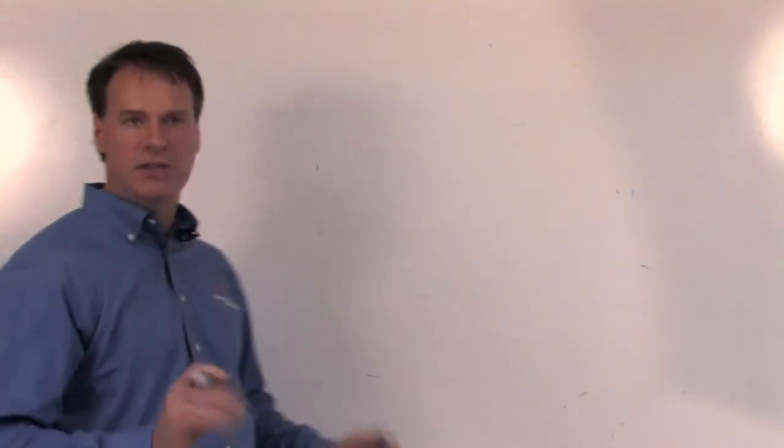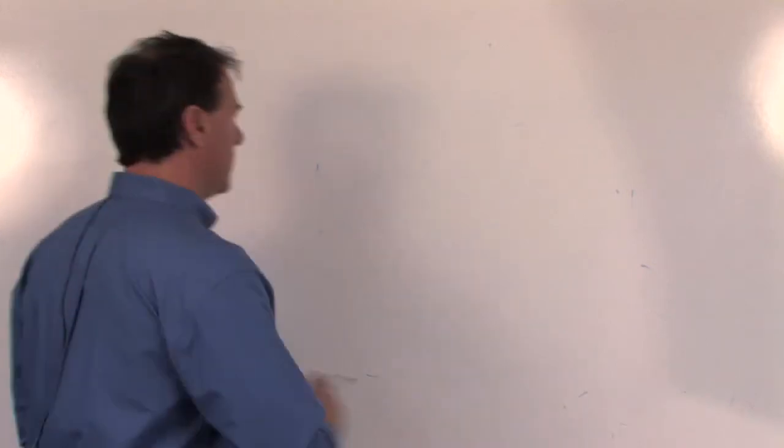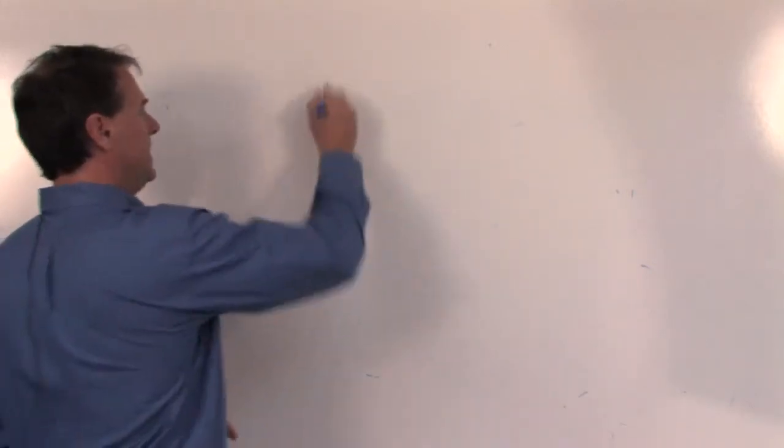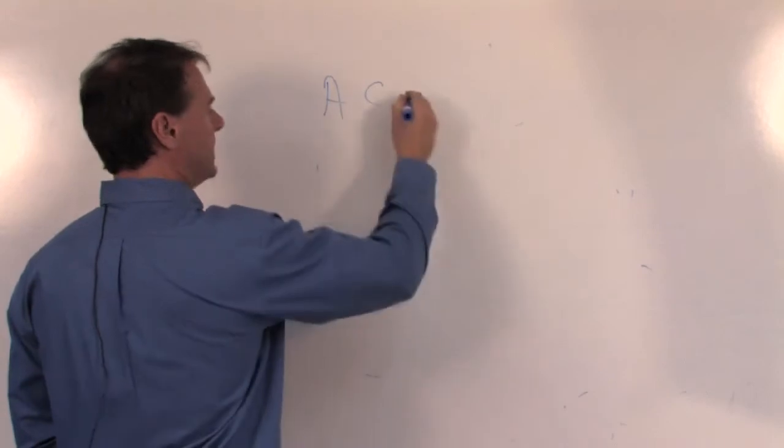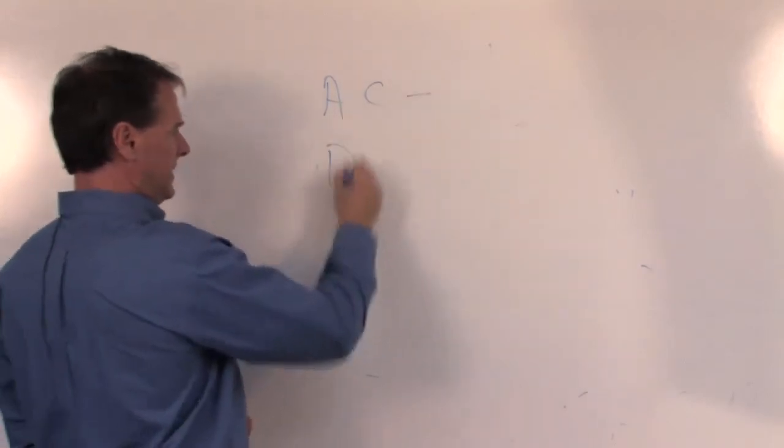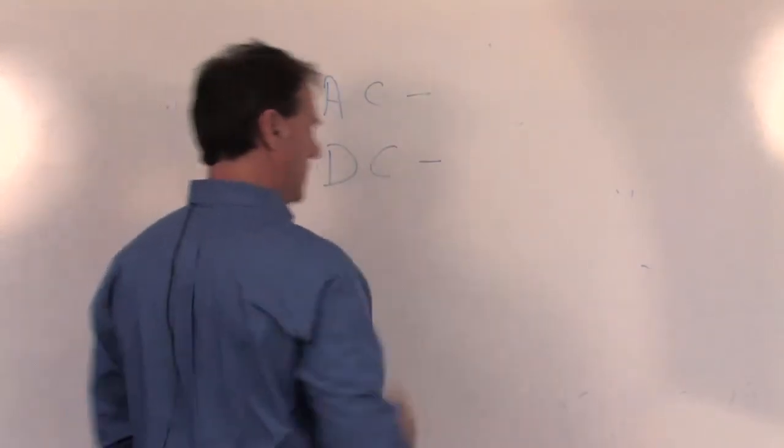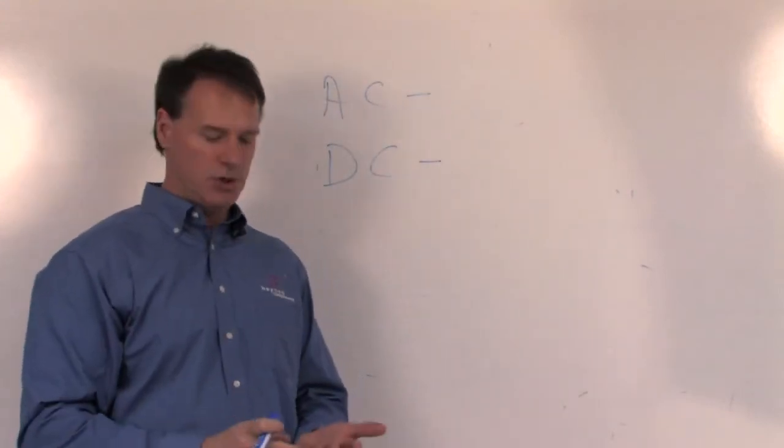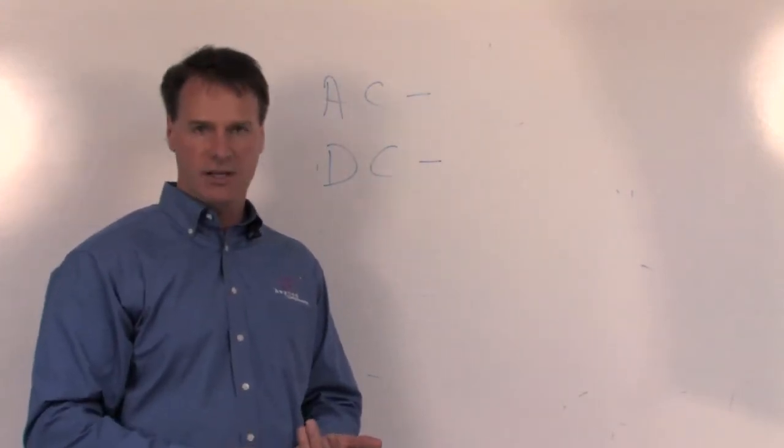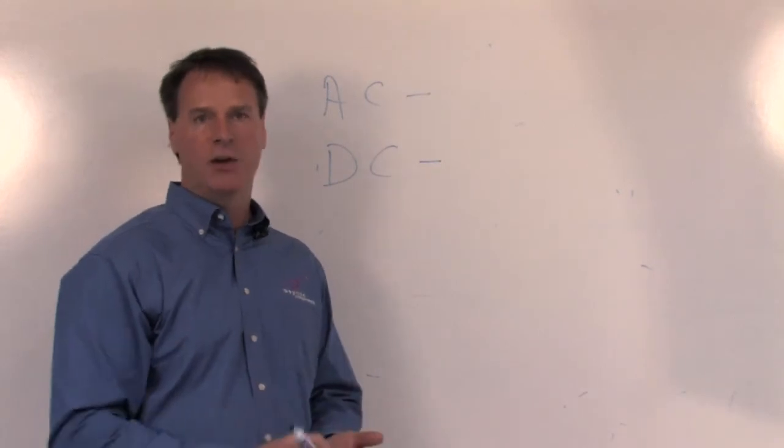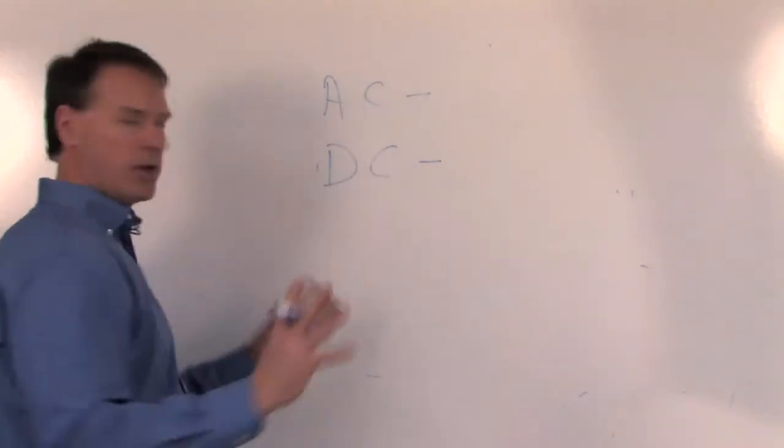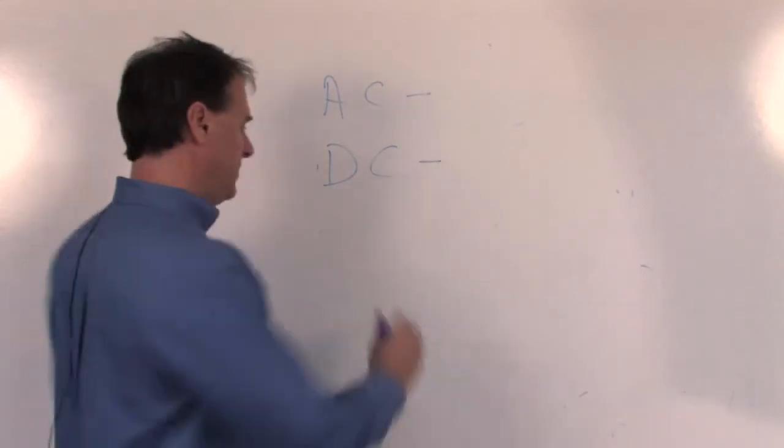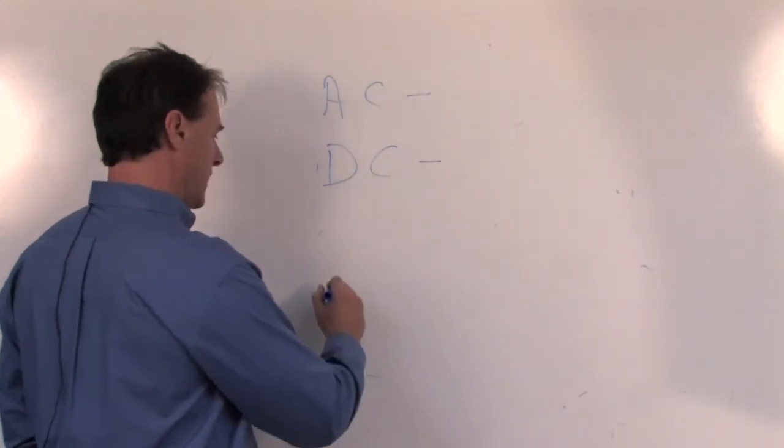There are basically just a few things you need to know about electronics. There are two types of power: AC, which stands for alternating current, and DC, direct current. Obviously electronics is a little hard to show because you can't touch or feel it, so I can give you some examples of how to learn what it is. Alternating current, if you were to look at it on a screen, would look like this.